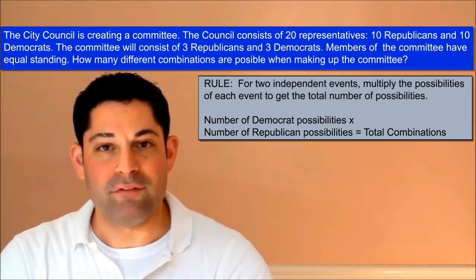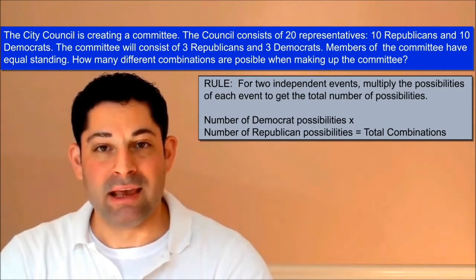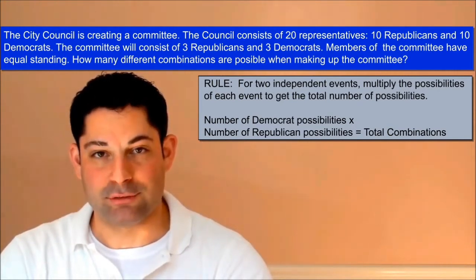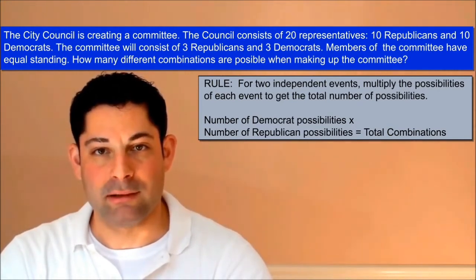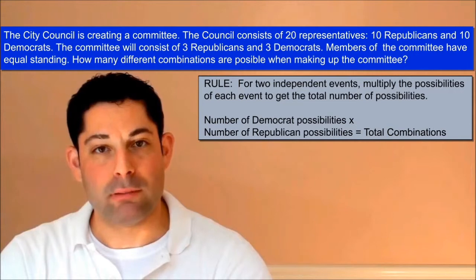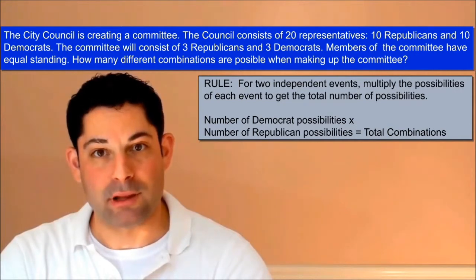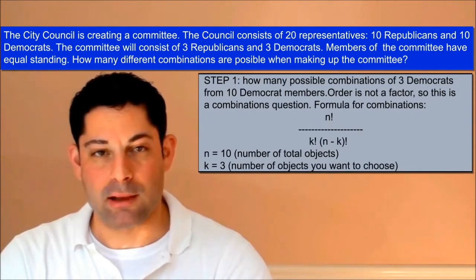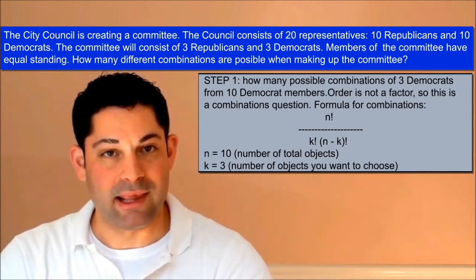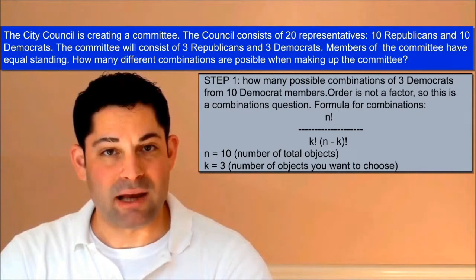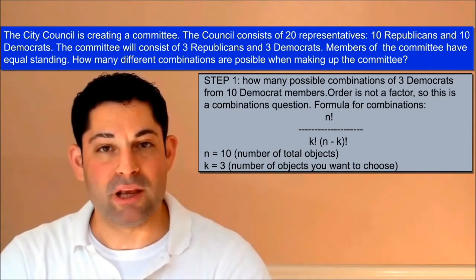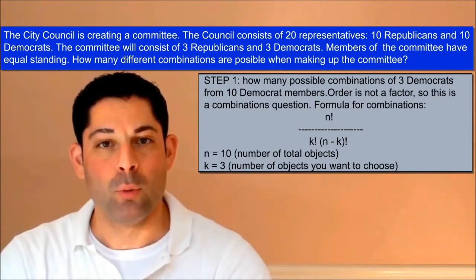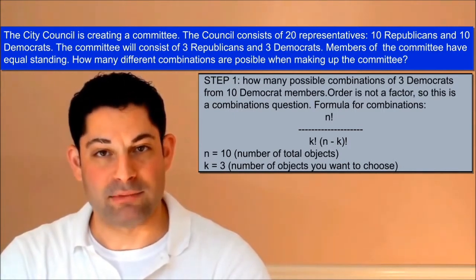The way to find how many ways we can choose k objects from n objects without replacement is by employing the binomial formula. Recall the binomial formula: n factorial over k factorial times n minus k factorial, for the number of ways we can choose k objects from n objects without replacing objects.